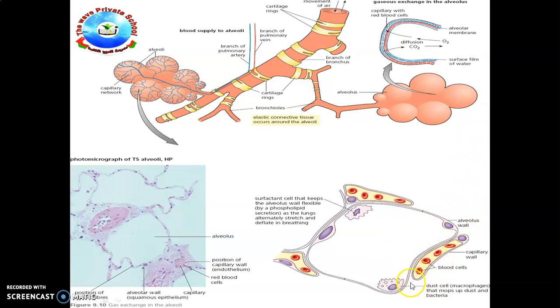These amoeboid cells migrate into the alveoli from the capillaries. These phagocytic white blood cells ingest any debris, fine dust particles, bacteria, and fungal spores. They also occur lining the surfaces of the airways leading to the alveoli.